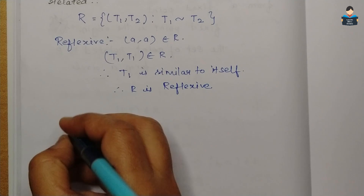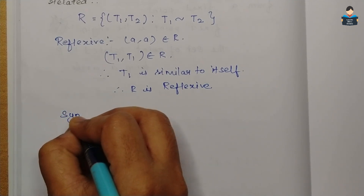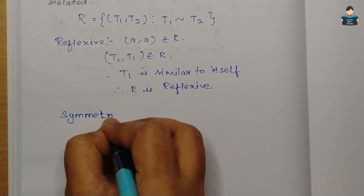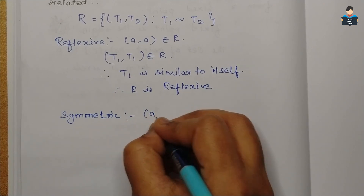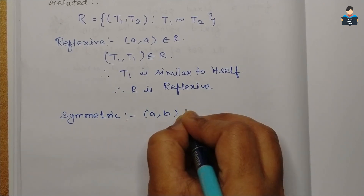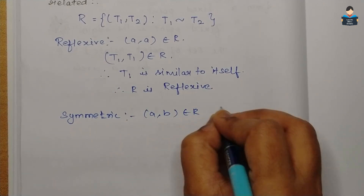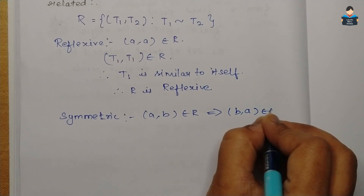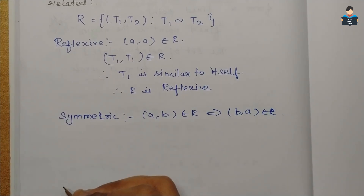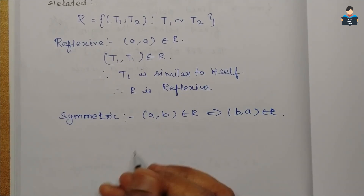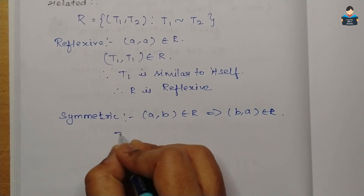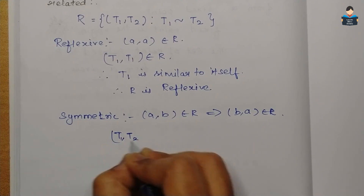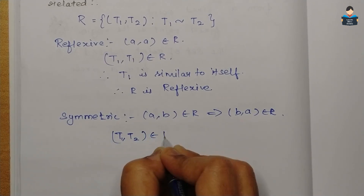Now the next property is symmetric. The symmetric condition is: if (A, B) belongs to R, this implies (B, A) belongs to R. So here, if (T1, T2) belongs to R, this implies T1 is similar to T2.